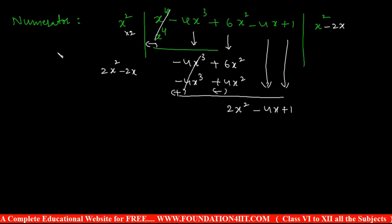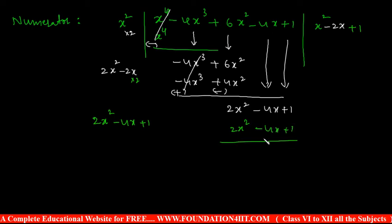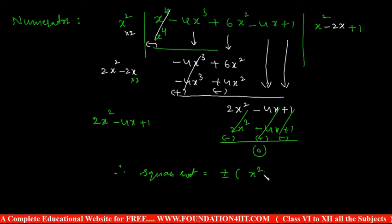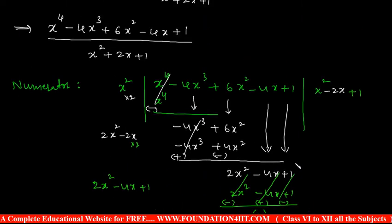Double the current quotient: 2x squared minus 4x. Then 2x squared minus 4x times 1 — the next term is plus 1. So 2x squared minus 4x plus 1. Last step: change the sign and cancel; you get 0. Therefore the square root of the numerator is plus or minus x squared minus 2x plus 1. This is the numerator part. And the denominator is x squared plus 2x plus 1.